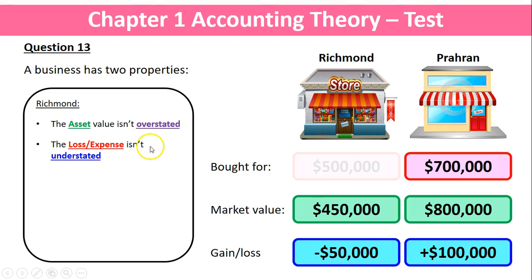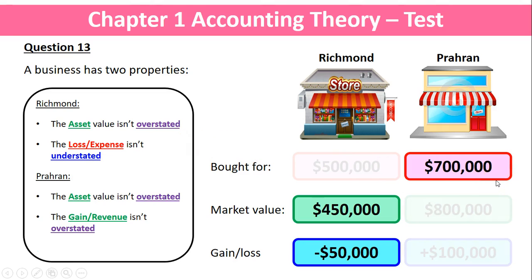We're also going to recognise the loss, which means that our expenses might not be understated. On the other hand, for the Paran property, we're not going to value it at the new market value of $800,000 — that would recognise a gain before it's certain. A gain is certain only when we sell the property; if we haven't sold it, the gain is not certain, so we keep the value at $700,000. We do this so the asset value isn't overstated, and the $100,000 gain or revenue also isn't overstated.